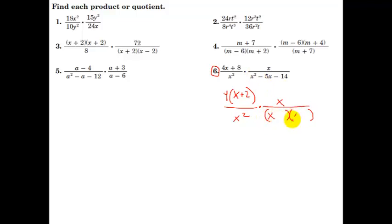So, put an x and an x. We're factoring this trinomial here. Multiplies to negative 14, adds to negative 5. That's going to be x minus 7, multiplied by x plus 2.